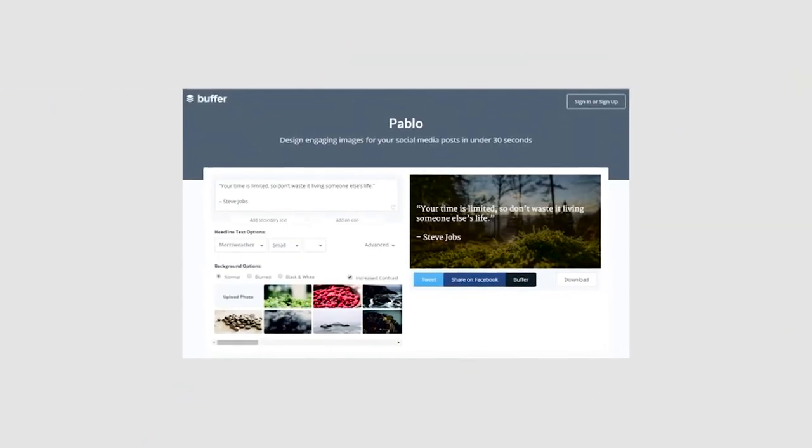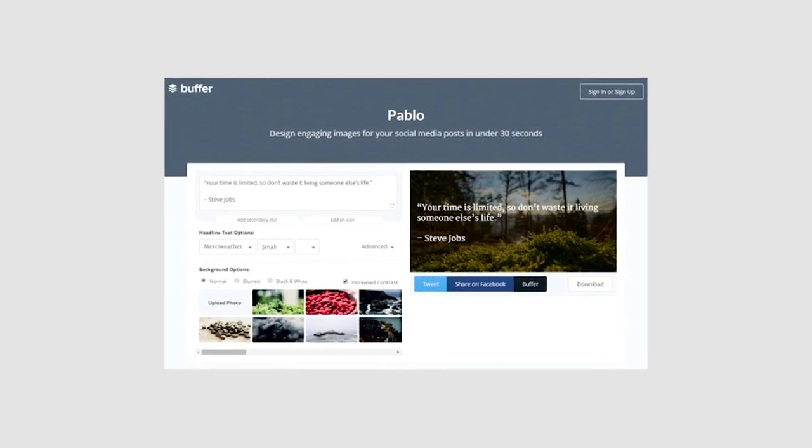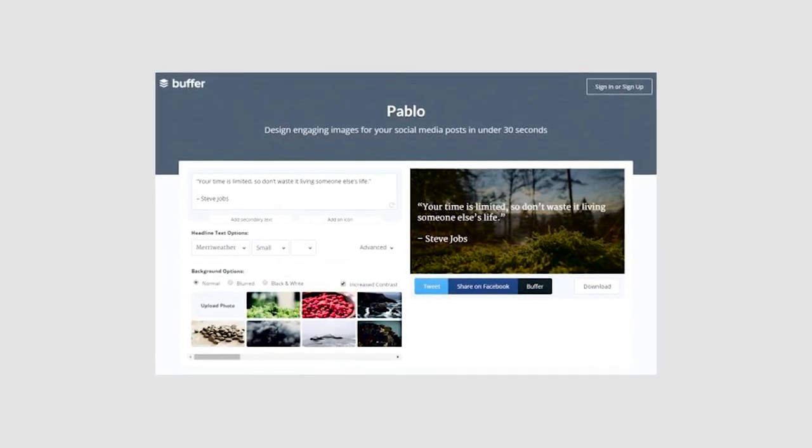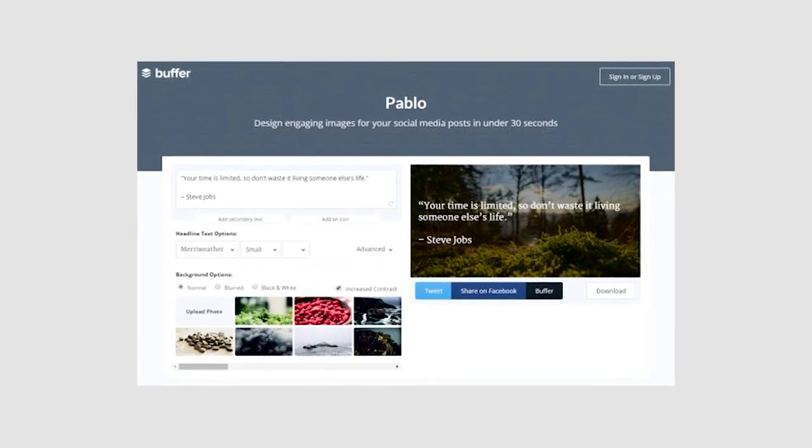One of the main reasons we like it is that it allows you to create groups so you can post the same content for a group. Buffer also has a built-in simple image creator called Pablo that I've talked about before. It allows you to customize your own photos or images with text and upload directly to your linked accounts.